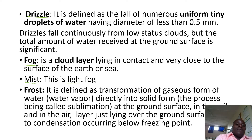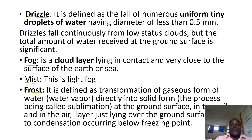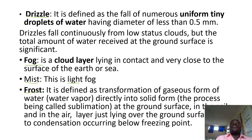Then we have frost. This is defined as the transformation of the gaseous form of water directly into solid form under the process of sublimation. Sometimes temperatures during condensation go below the freezing point, and the soils themselves on the ground freeze. When they are frozen, they form frost.